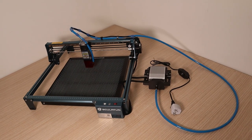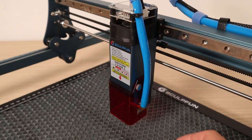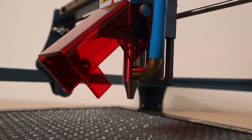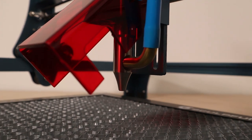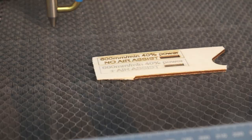Now let's get back to the Sculpfun S10. The laser module on this machine is a 10 watt module with a fixed focus which is ready for an air assist. This should offer good performance. Later in the video I will show the difference an air assist can make.